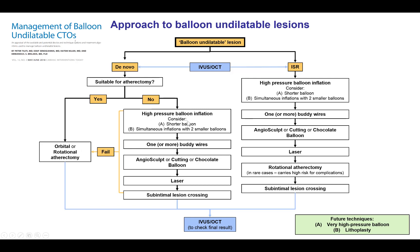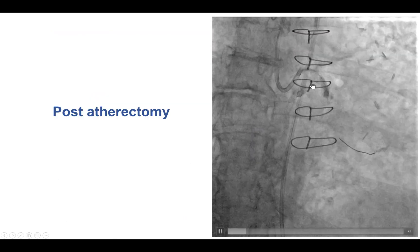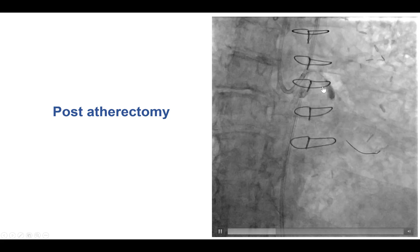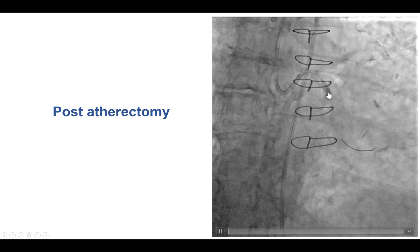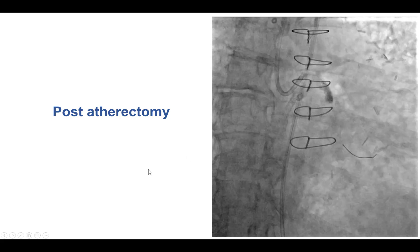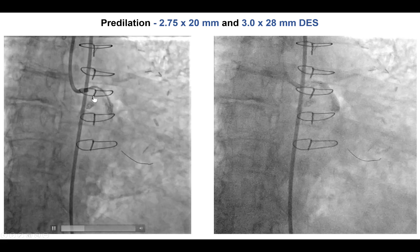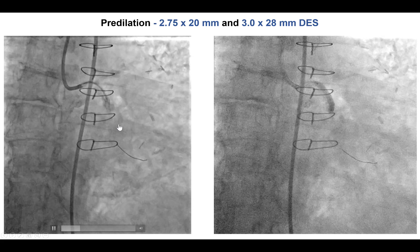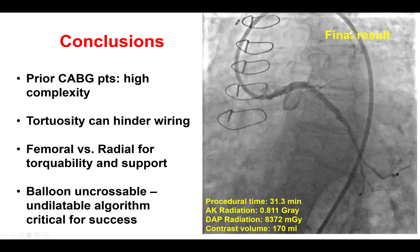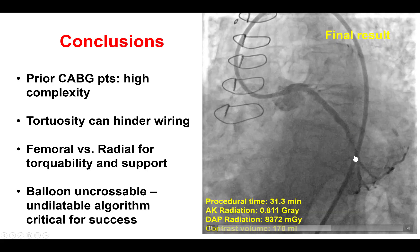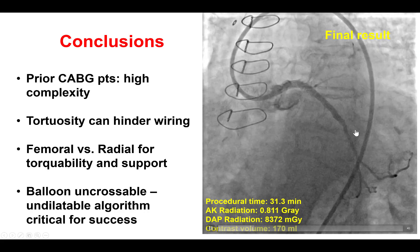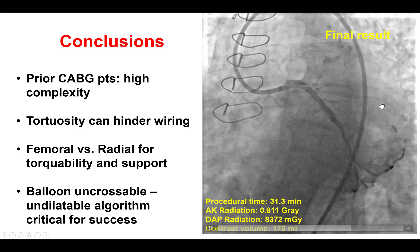In this case we did have balloon rupture, suggesting balloon dilation was unlikely to work. We performed several passes of orbital atherectomy, and after that we were able to expand with a balloon. Following atherectomy we always want to perform balloon angioplasty before placing any stents, just to ensure adequate expansion of the lesion. Stents were then placed all the way from the left main into the second obtuse marginal branch and post-dilated at high pressure, giving a nice final result with TIMI 3 flow in the second obtuse marginal branch.